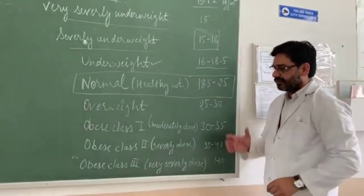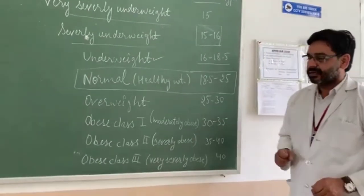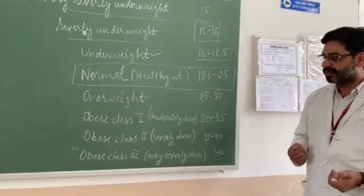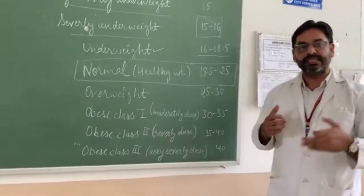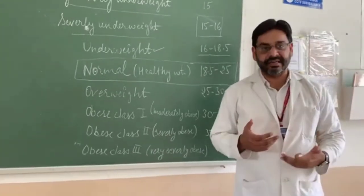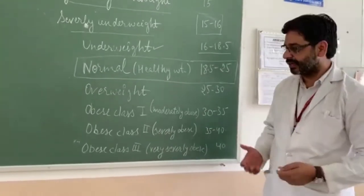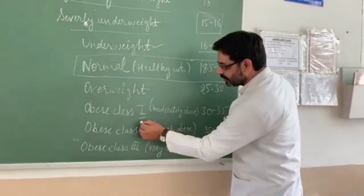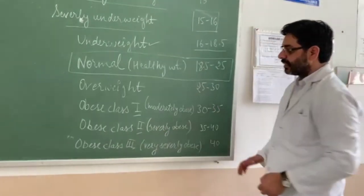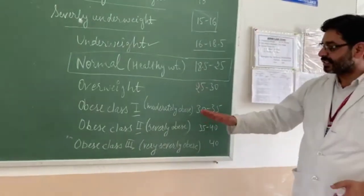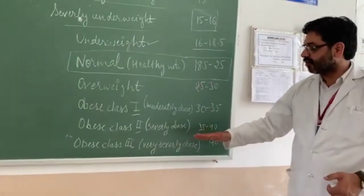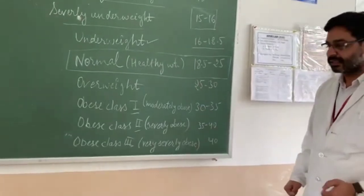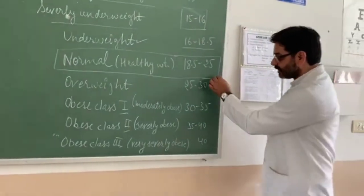After that, there are overweight persons and obese persons. Obesity has three categories in BMI: obese class 1, 2, and 3 — that is moderate, severe, and very severe obesity.